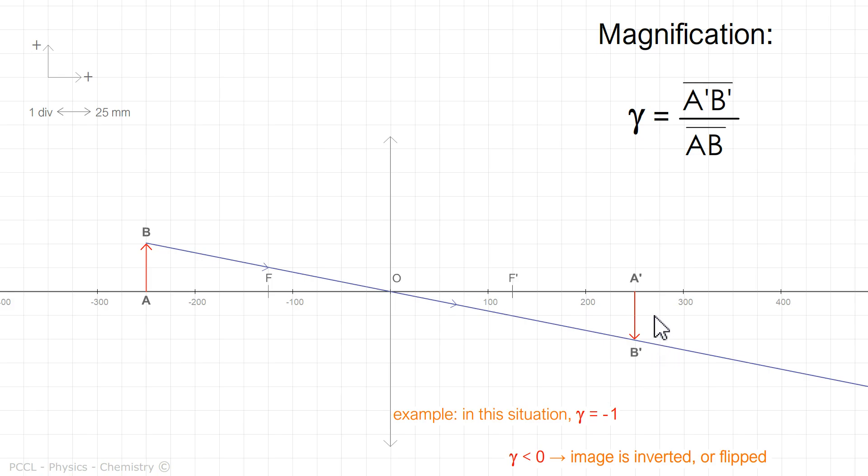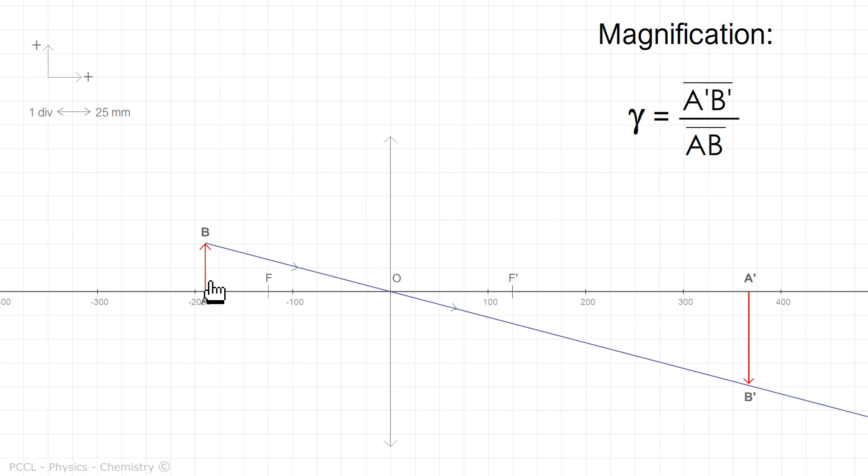Note that the magnification has no unit since it is the ratio of two magnitudes of the same kind. I will submit to you a second example, where the image is twice the size of the object. I write that gamma is 2 in absolute value, otherwise it is negative 2, minus 2, again to mean that the image and the object are not oriented in the same way.